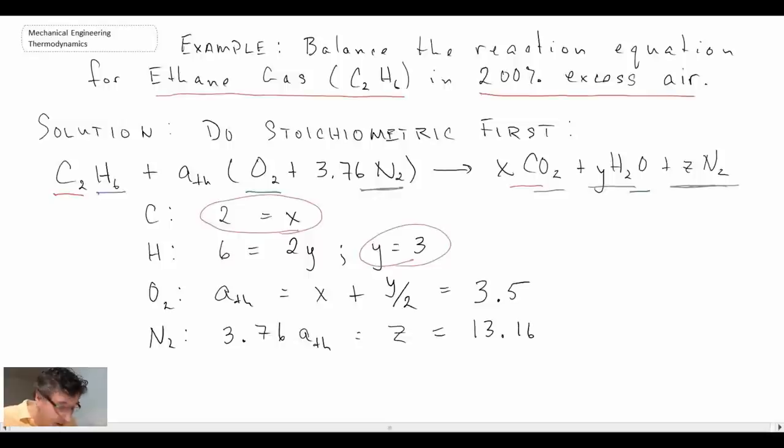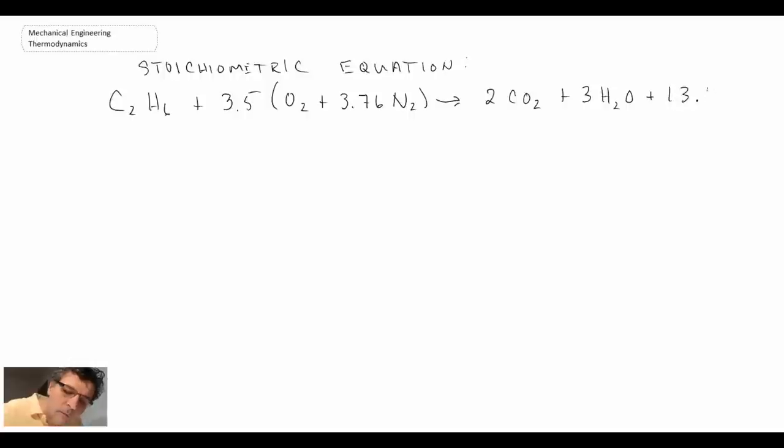And so that becomes the stoichiometric balance. And so what we can do is rewrite our equation before introducing this excess air that we have in the problem statement. So let's rewrite it with the values that we've just solved for.